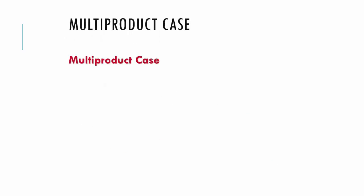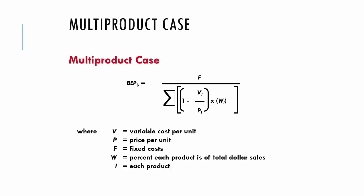The last example only considers a single product. In the case of selling multiple products we have the following formula for calculating the break-even point in dollars. Note that the letter I represents an index for the different products sold.